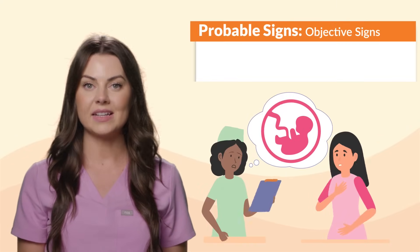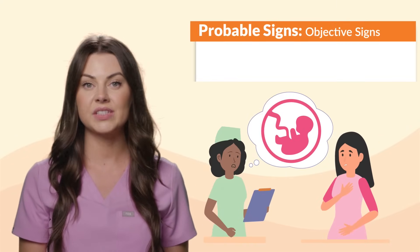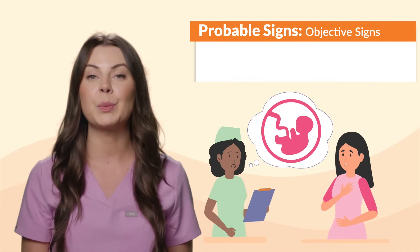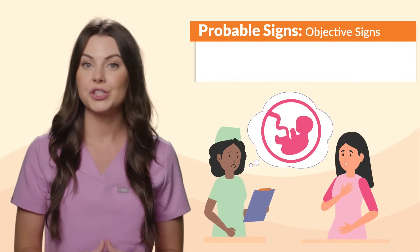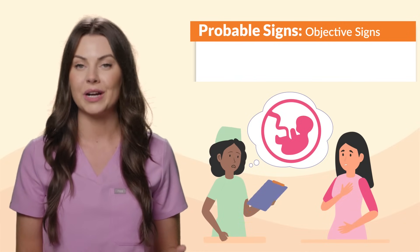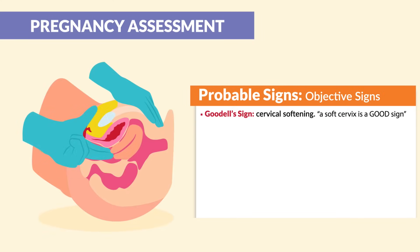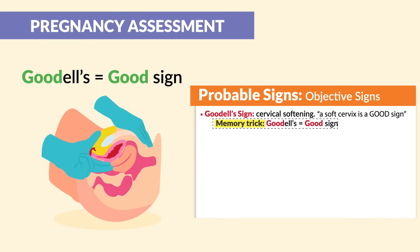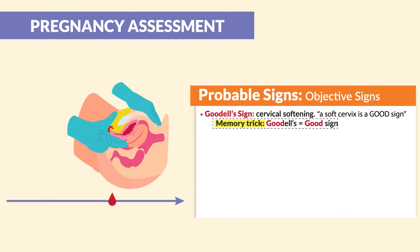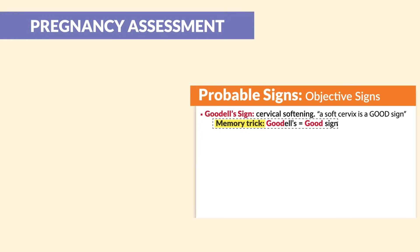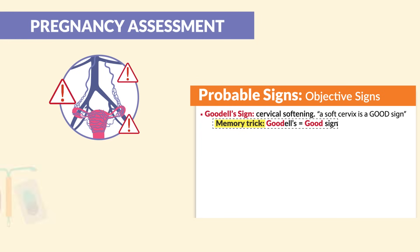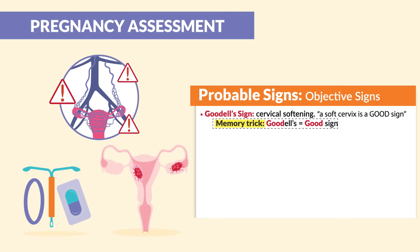Moving on to probable signs. These are also called objective signs of pregnancy and they are observed by the provider, though they may still have alternate reasons other than actual pregnancy. Now for some key terms that love to show up on tests. First we have Goodell sign, which is cervical softening. A soft cervix is a good sign — the memory trick is Goodell is a good sign. In true pregnancy this sign occurs at approximately four weeks gestation, but may also be caused by hormonal contraceptives and uterine tumors.